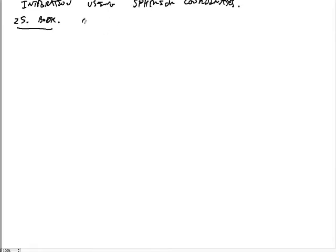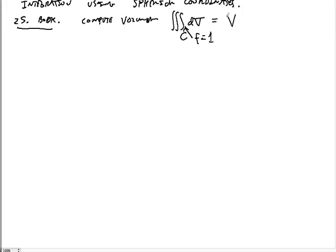What we're going to do is compute a volume of the form where we have some volume region C times dV. The idea here is that when f, the function we're integrating, is just one, this will just be the total volume, which I'll call capital V. So let's define what this volume is. Problem 25: the volume is going to be defined by these enclosing surfaces.